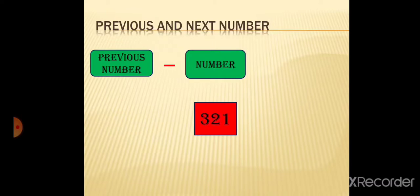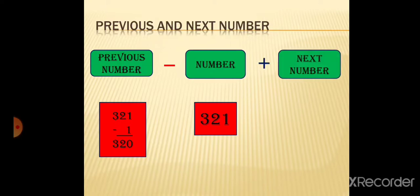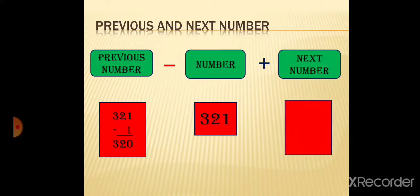The number given to you is three hundred and twenty-one. To get the previous number, if I subtract one from 321, I get three hundred and twenty. In the same way, to get the next number, I add one to 321, so 321 plus 1 gives three hundred and twenty-two. Let's see more examples.